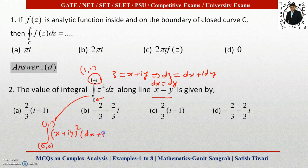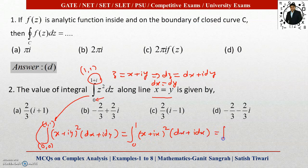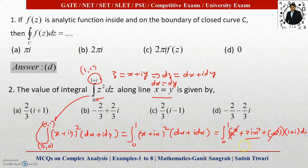Expanding (x + ix)² using the formula (a+b)² gives x² + 2ix² + i²x² = x² + 2ix² − x², so the x² terms cancel, leaving 2ix². Taking dx common, we get 2ix²(1 + i)dx. Now it is easy to integrate: factor out 2i and (1+i), and integrate x² from 0 to 1, giving x³/3.